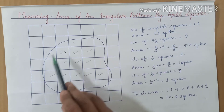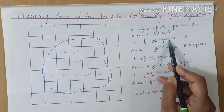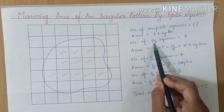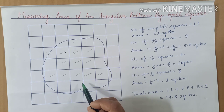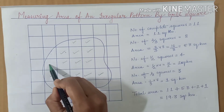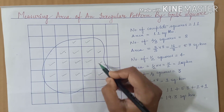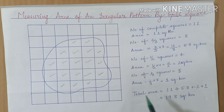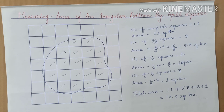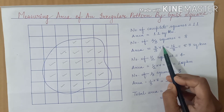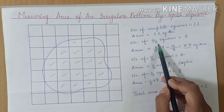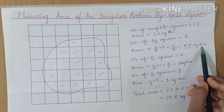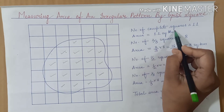After counting complete squares, we identify squares that are two-thirds of a full square — meaning less than a full square but more than half. Counting these gives 1, 2, 3, 4, 5, 6, 7, 8 — a total of 8 two-thirds squares. Multiplying two-thirds by 8 gives 5.3 square kilometers. So the area occupied by the two-thirds squares is 5.3 square kilometers.